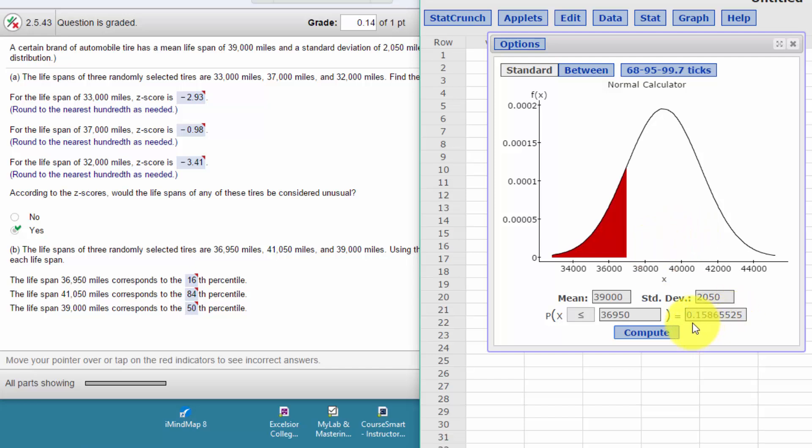And you can see that now we've got a value of 0.1586, or 0.016. So that's the 16th percentile—we've got 16% of the data to the left of that value of 36,950.